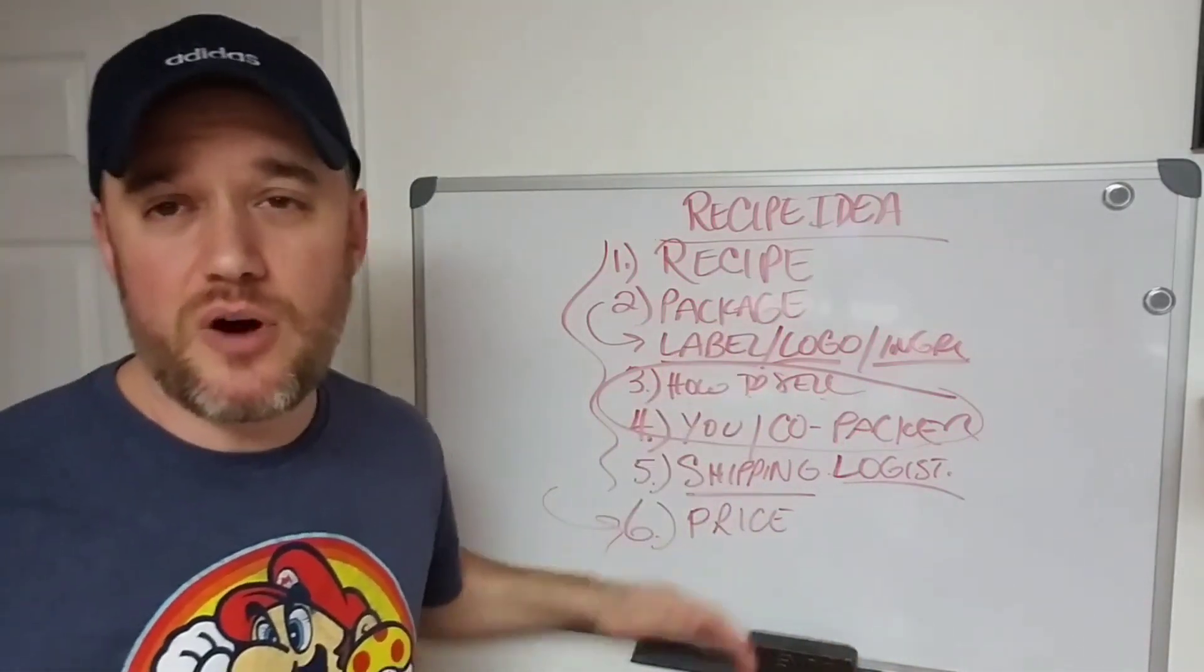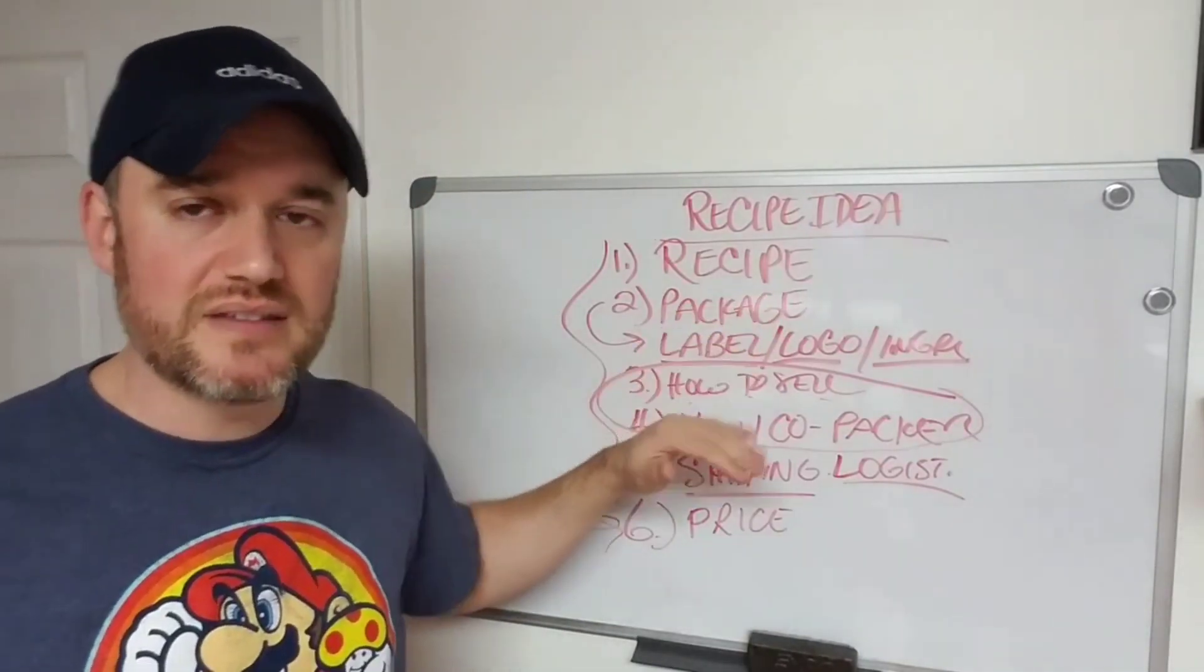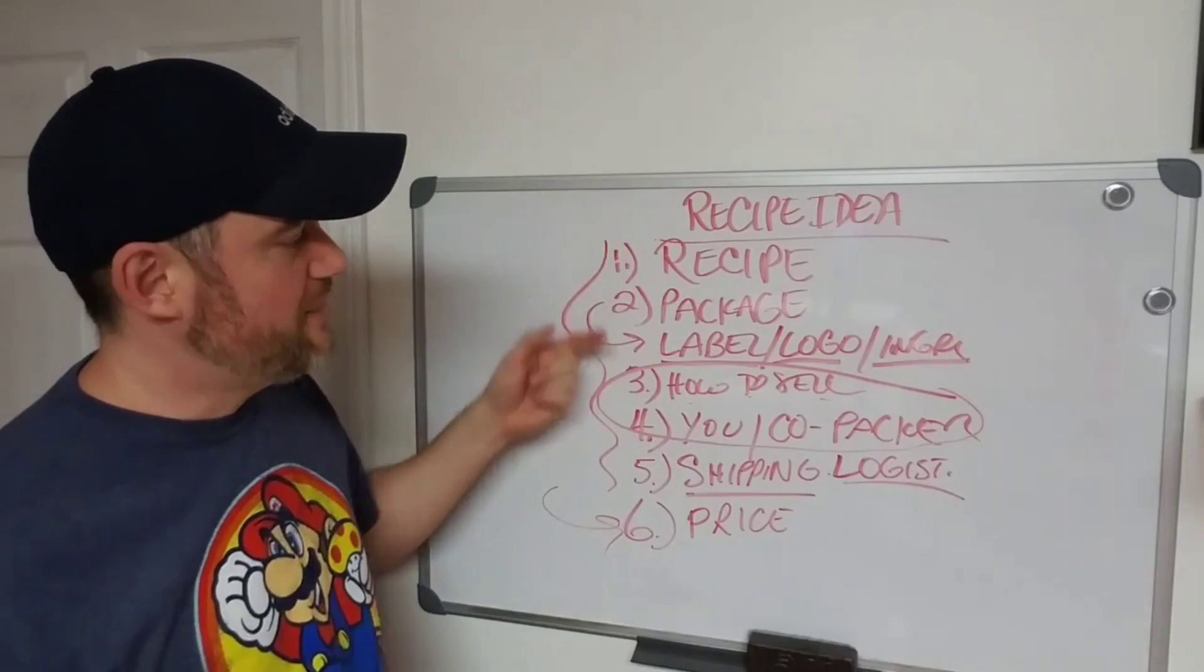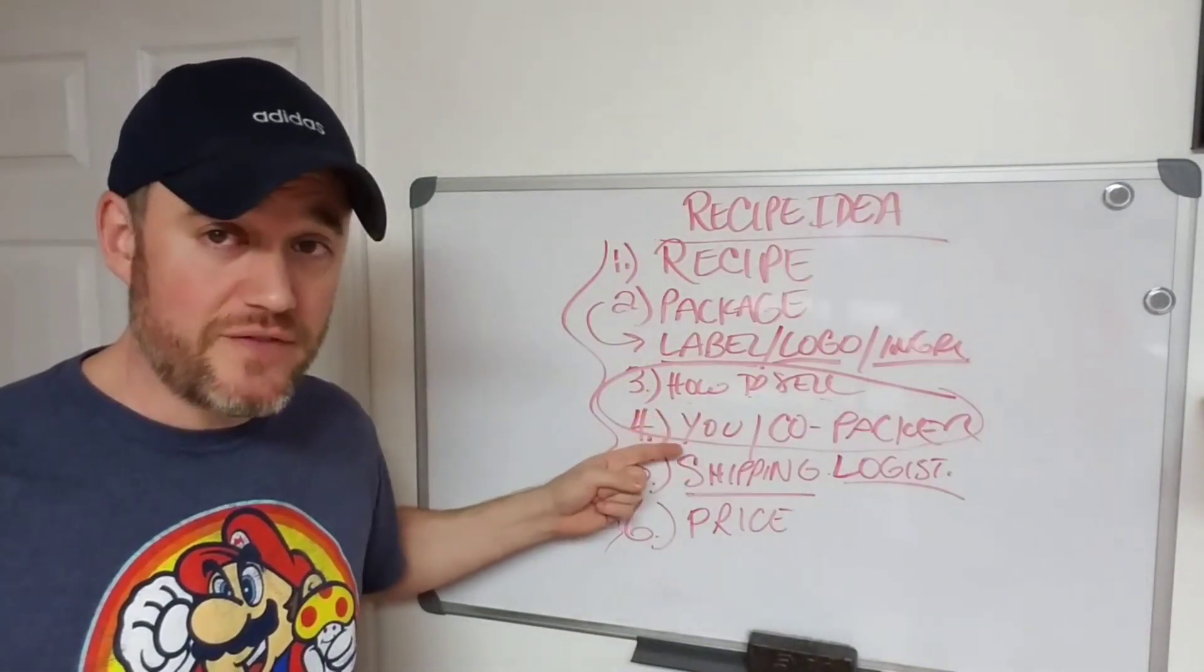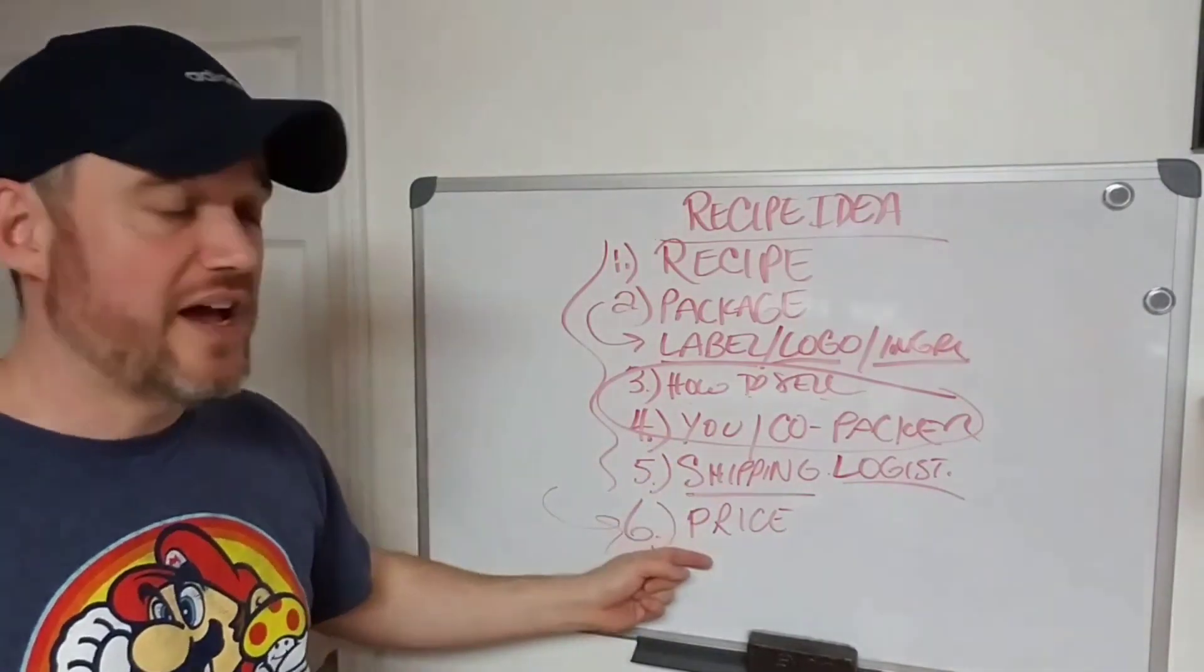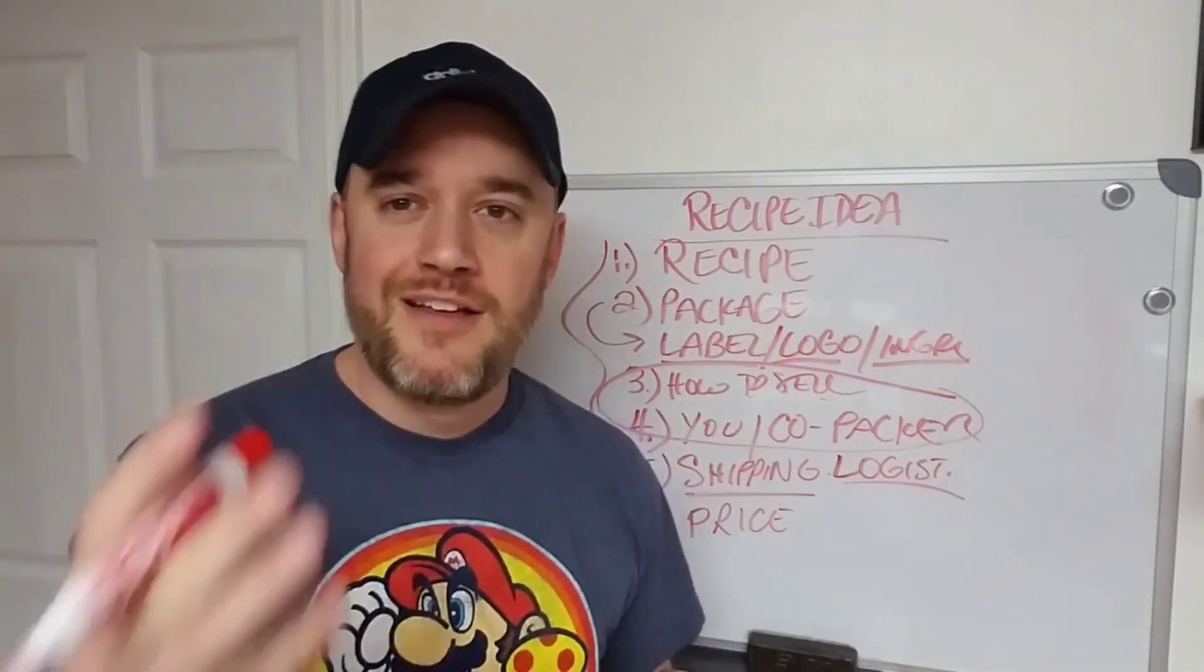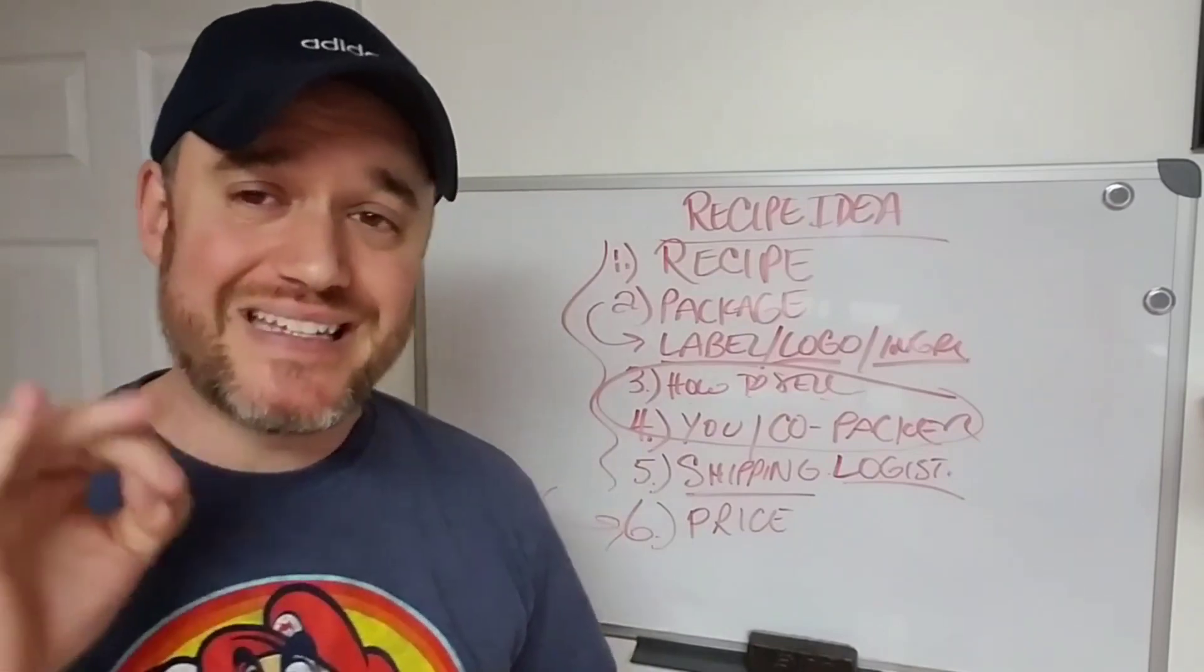So out of all of the processes in making a recipe into a finished product, these six steps are probably the most important aspects to think about. Like I said, in between all of this, there's a lot of other details, but I'm not going to get into that. So: recipe, package and label, how are you going to sell it, how are you going to manufacture it, shipping and logistics, and then finally, determining that price based on all of that. With that being said, I'll wrap up the video. I hope that breaks down the basic steps.